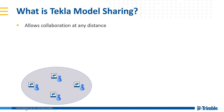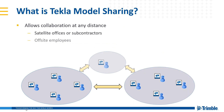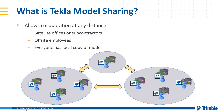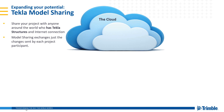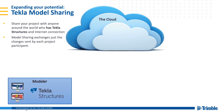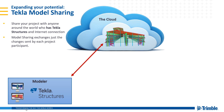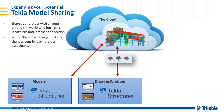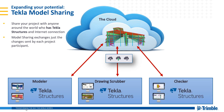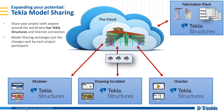Model sharing allows you to have every user involved in the same project no matter where they're working — different offices, off-site. It solves this problem by allowing everyone to have a local copy of the model on their own computer, so they don't need to connect back to a server. It works by allowing them to simply push changes — not the entire model, but only changes — to the cloud service, which others can then download, whether it's a modeler, drawing scrubber, checker, or someone at a shop.